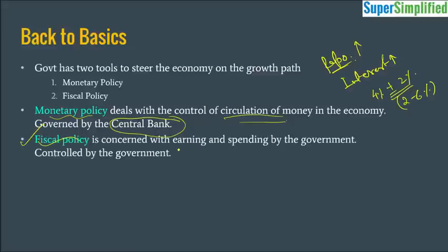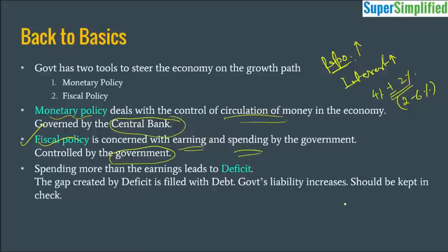Fiscal policy is concerned with the earnings and spendings of the government, and this is usually controlled by the government itself. The government has both inflow and outflow of money — that is, receipts and expenditures. Receipts come in the form of direct and indirect taxes, revenue from public sector enterprises, and interest on loans. Expenditures include running expenses of the government, capital expenditure like infrastructure development, and spending on welfare schemes. When the expenditures of the government exceed the receipts, it leads to a deficit.